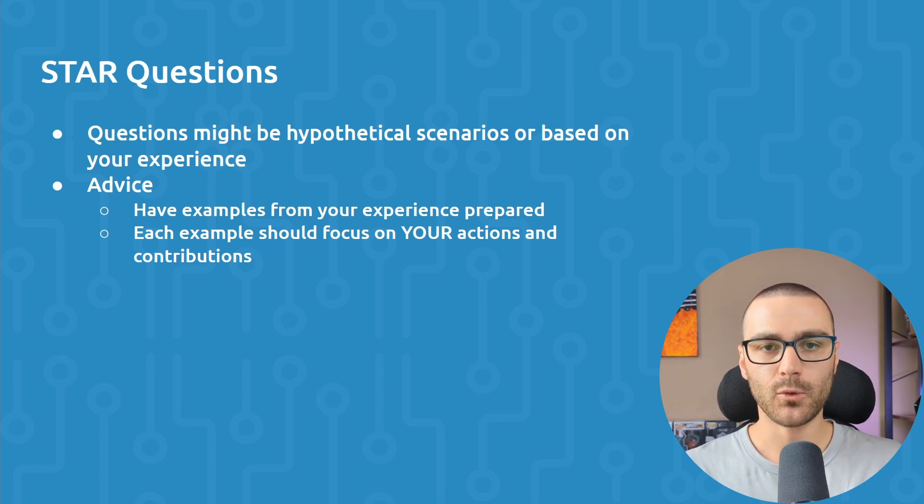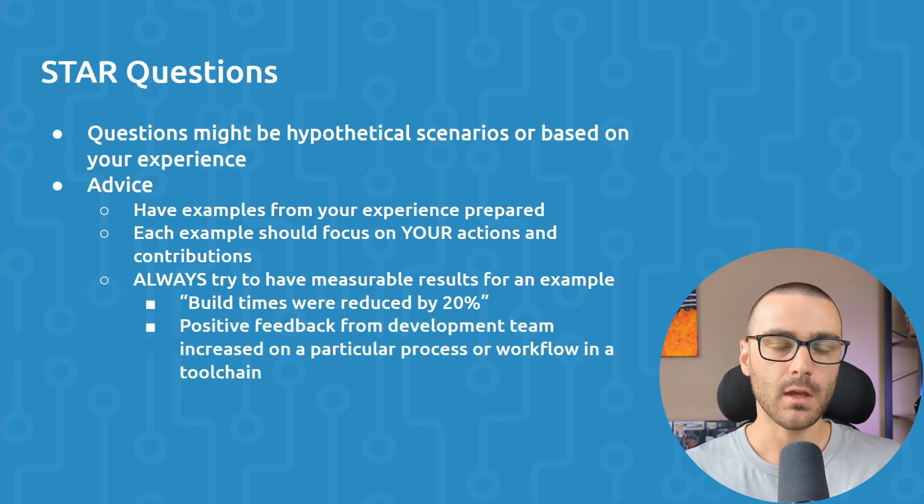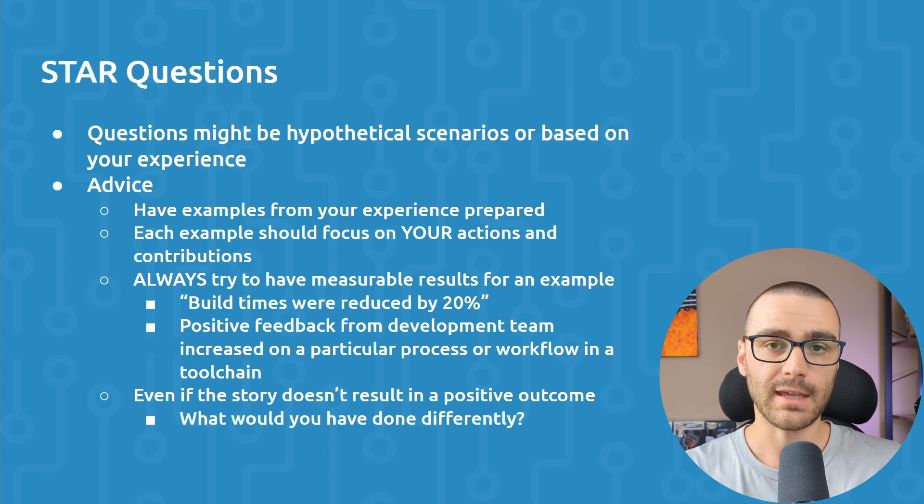Additionally, the examples that you come up with should always end with measurable results. So for instance, you could give an example where the result was that build times were reduced by 20%, or that positive feedback from the development team increased for a particular process or workflow that you improved. Even if the example that you give results in a negative outcome, it's still a useful example because oftentimes interviewers will ask you something like tell me about a time that you failed to meet a project deadline or a project requirement. And in these cases, you want to have those examples prepared. Even though the example may have resulted in a negative outcome, the follow-up to that is what did you learn? What would you have done differently? That's typically what they ask in those cases.